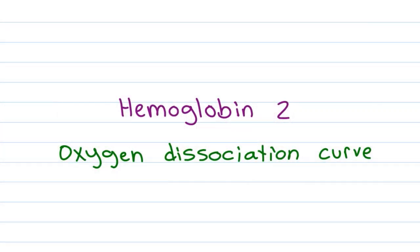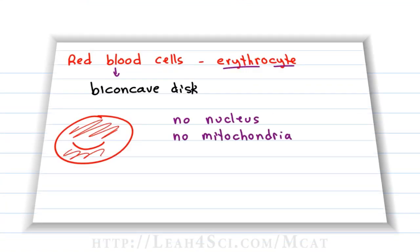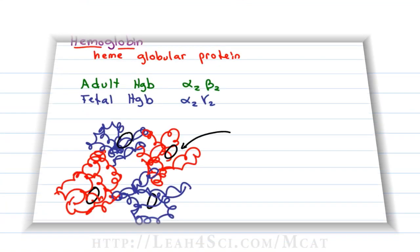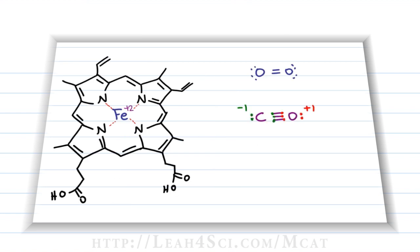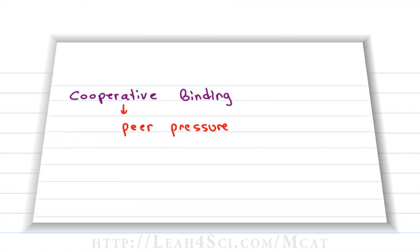Lea here from lea4sci.com/mcat. In this video, we'll look at the hemoglobin oxygen dissociation curve from a perspective of understanding the standard curve and then the right shift and left shift. In video one, we introduced the concept of hemoglobin and that oxygen binding is cooperative, which we compared to peer pressure. So let's take a look at what happens.